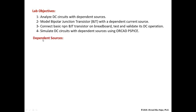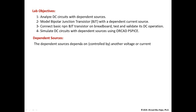So what are dependent sources? Dependent sources are sources where their values depend on, or are controlled by, another voltage or another current in the circuit. There are four different types of dependent sources, and all dependent sources will have a diamond shape — if you see a diamond shape, you know it's a dependent source.